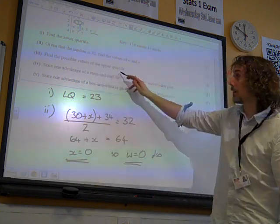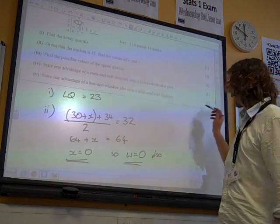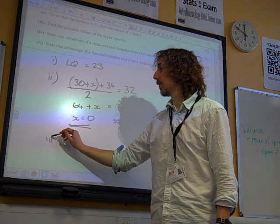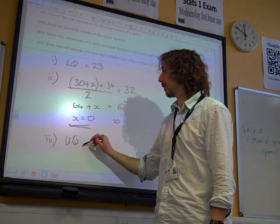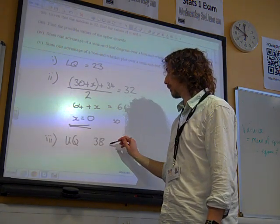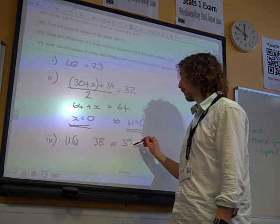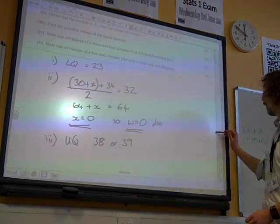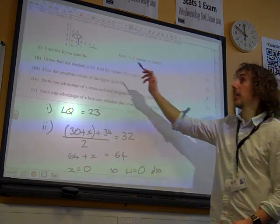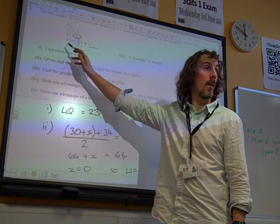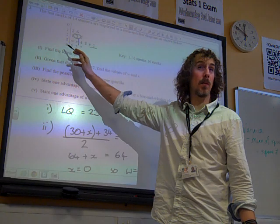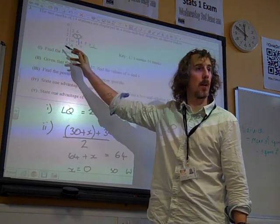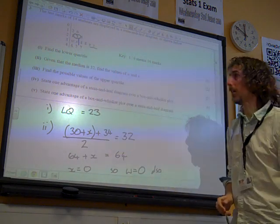We're not asked for Z, though. We're asked for the values of the upper quartile. The upper quartile is either 38 or 39. They're the only two values it could possibly be. I know that there's a big gap to the next value, which is 46. But it can't be any number between 40 and 46, because otherwise Z would have been in this row over here, wouldn't it? So it can only be 38 or 39.